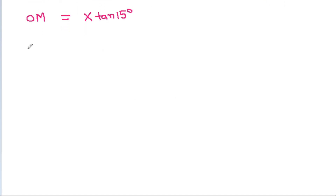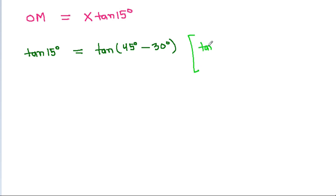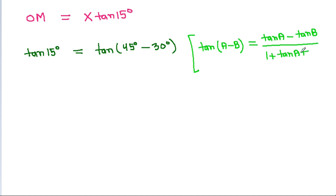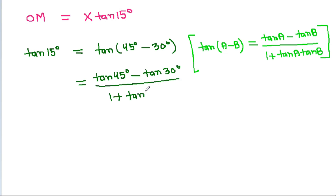And tan 15° is equal to tan(45° - 30°). Using the formula tan(A - B) = (tan A - tan B) divided by (1 + tan A · tan B), this will be equal to (tan 45° - tan 30°) divided by (1 + tan 45° · tan 30°).